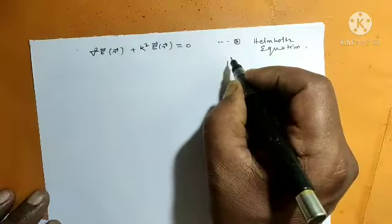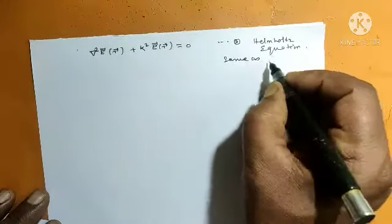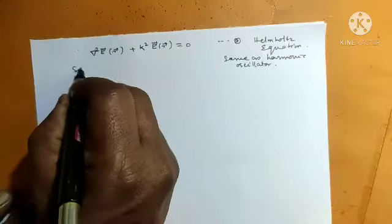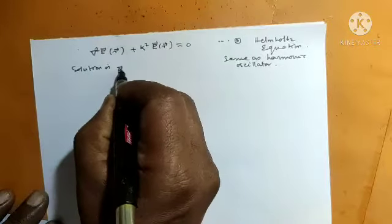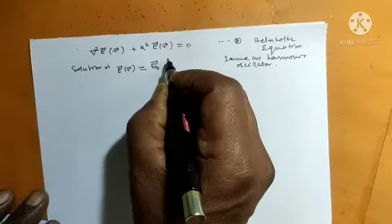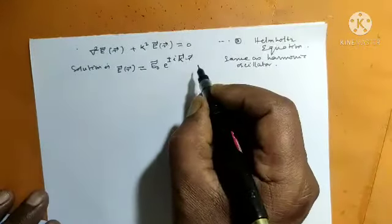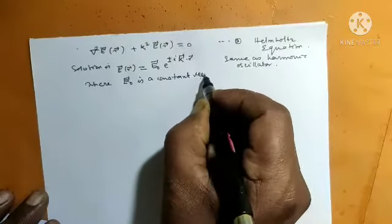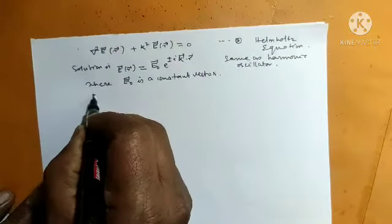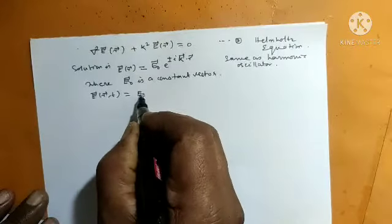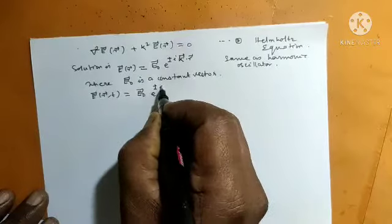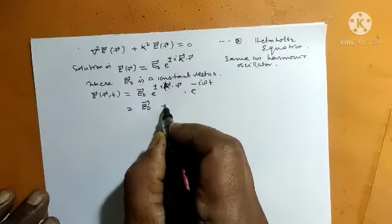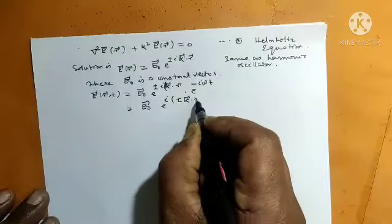The Helmholtz equation is the same as the harmonic oscillator, and its solution is the same. The solution is E(R) equals E0 e to the power plus or minus iK dot R, where E0 is a constant vector. Then E(R, T) equals E0 e^(±iK·R) into e^(-iωT), which can be written as E0 e to the power plus or minus i(K dot R minus omega T).